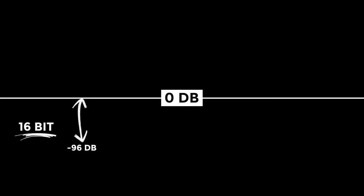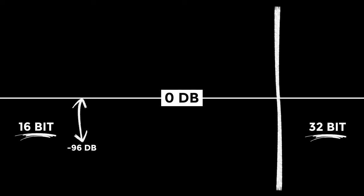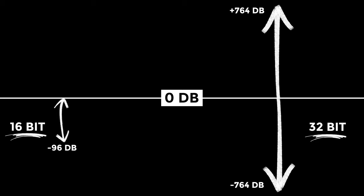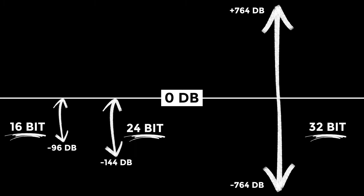16-bit has a theoretical dynamic range of 96 dB, meaning it can represent sound levels from softest to loudest spanning 96 dB. It sounds like a lot, but 32-bit float provides an incredibly wide dynamic range — a theoretical dynamic range of over 1500 dB. That means it can capture sound levels from the faintest whisper to the most thunderous explosion imaginable. For reference, 24-bit has a theoretical dynamic range of 144 dB.